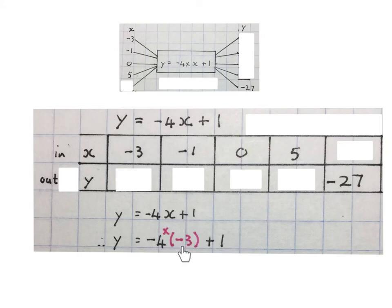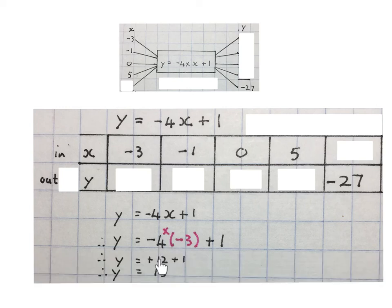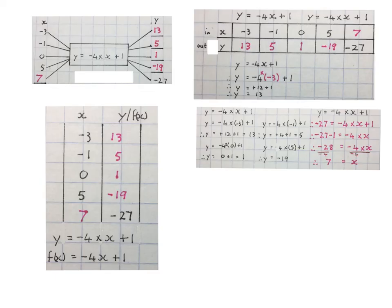Remember to substitute in brackets, and remember if there's nothing between the four and the variable there is a multiply. Then we go minus four times minus three is plus twelve, and then plus that one gives us the Y value as thirteen that goes there.